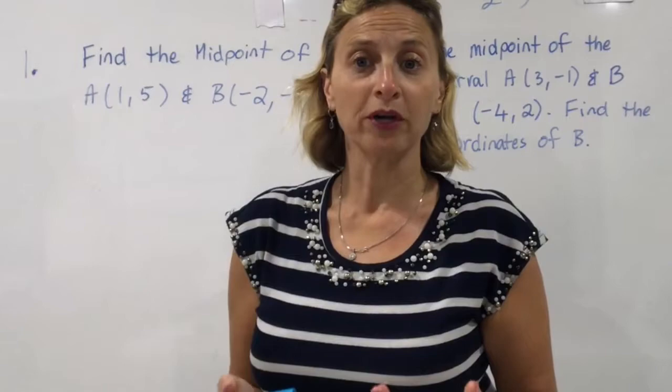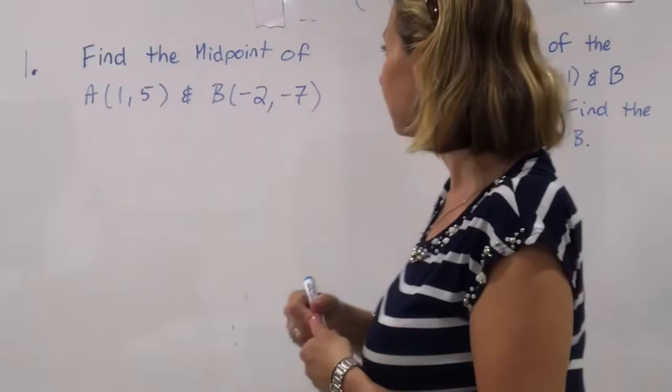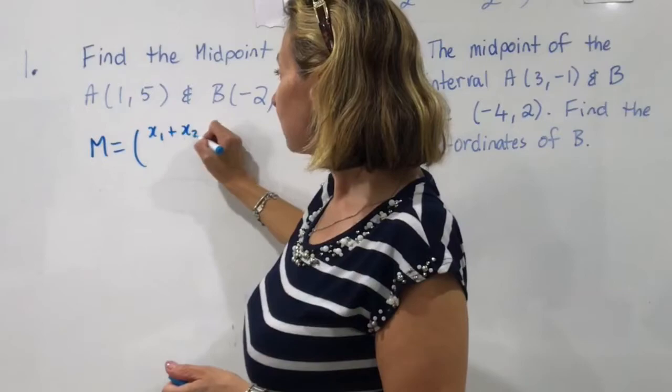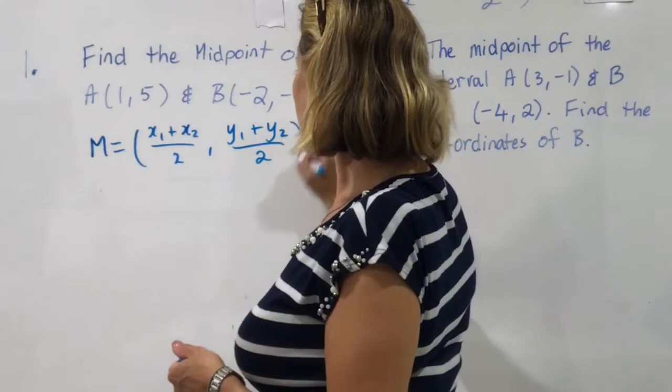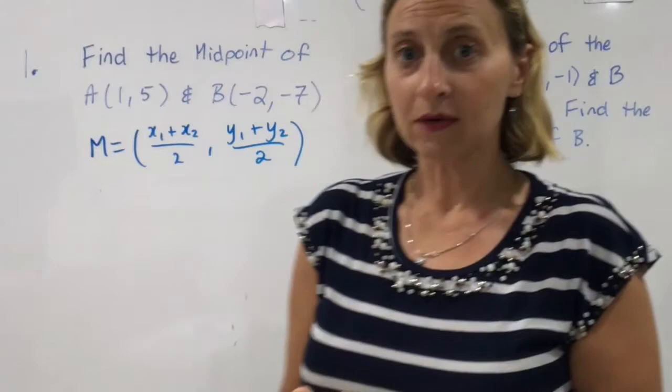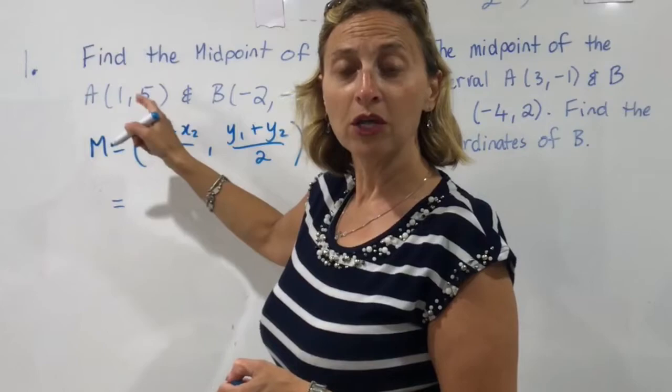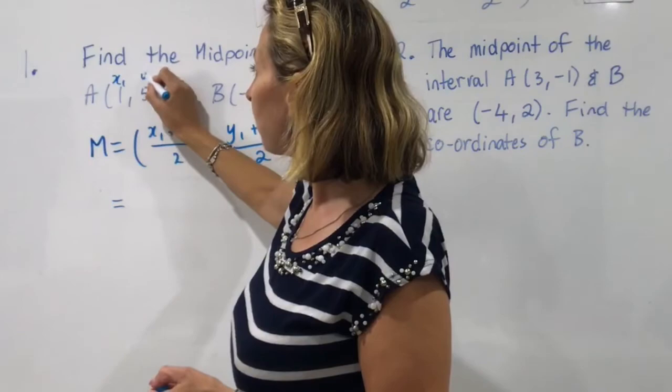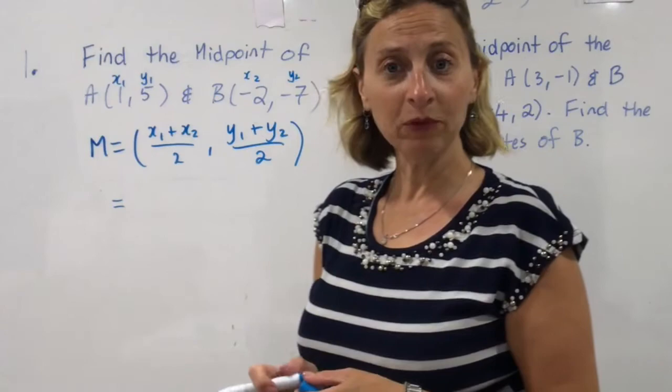Let's have a look at the first type of questions you can get which is really just find the midpoint of two points A and B or find the midpoint of an interval AB. We know that the midpoint formula is x1 plus x2 on 2 and y1 plus y2 on 2. Don't forget if you're going to use a rule you should always write the rule down. Don't get lazy. We want to get them right. Remember from distance if I want to use x1 y1 and x2 y2 the best thing to do is to label the points first. x1 y1 and x2 y2.